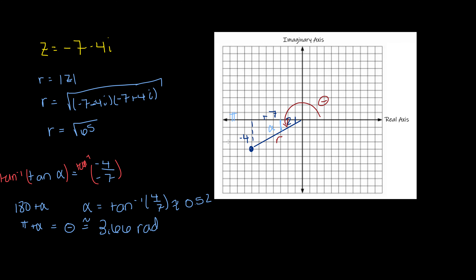Since we're in quadrant three, theta equals pi plus alpha. That gives us theta approximately equal to 3.66 radians. So my polar coordinate z is going to equal √65 cis(3.66). There we go — we converted from rectangular to polar form.